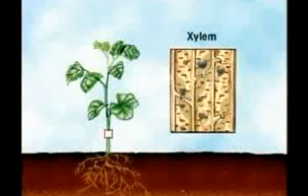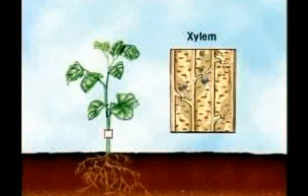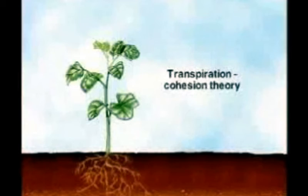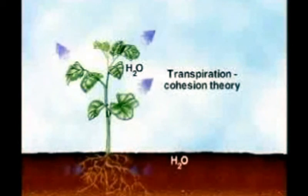Cohesion causes the water molecules to stick together and pull each other up inside these narrow tubes. Thus, the movement of water through plants occurs by a combination of two processes, transpiration and cohesion.